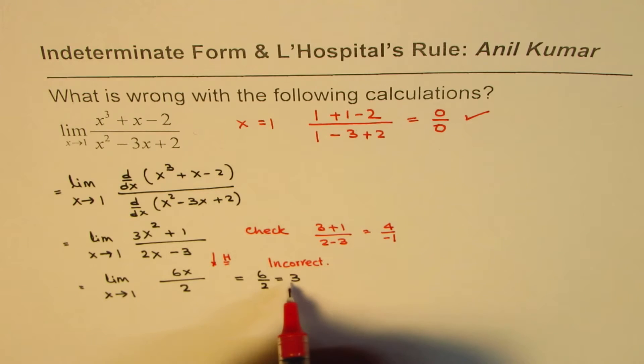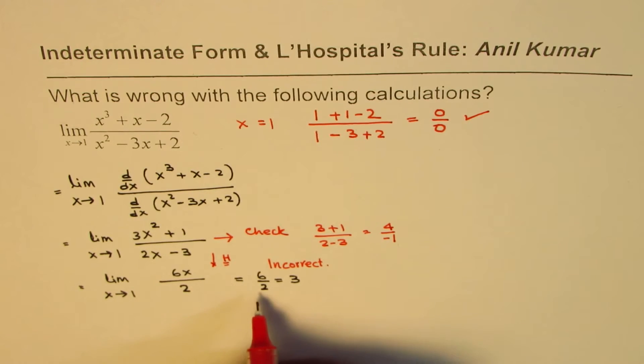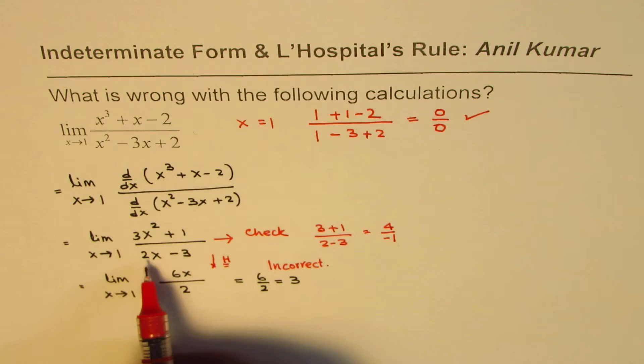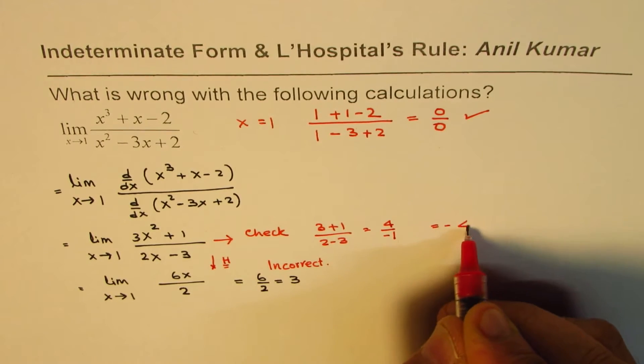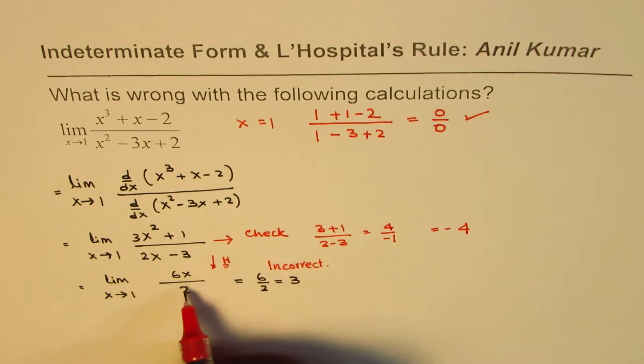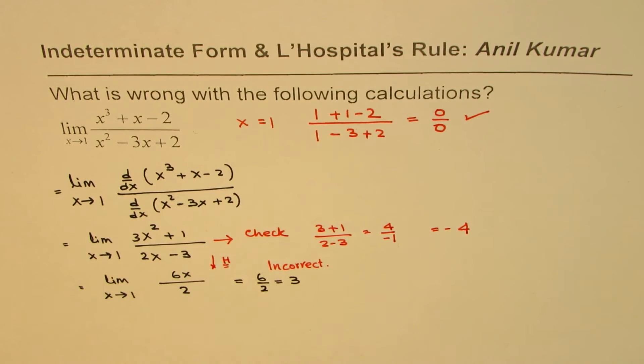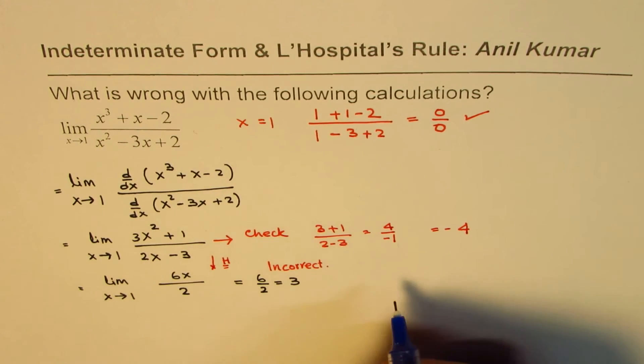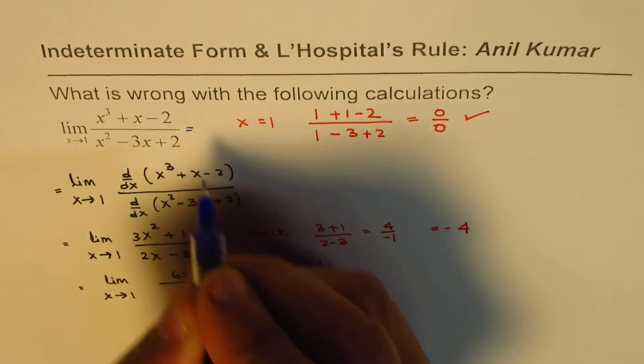Therefore this step where I performed L'Hospital's rule is incorrect. In fact the answer was right here, so the actual solution for this particular question will be that the limit is indeed equal to -4. There was no need to do it, it should not be done since this is not the indeterminate form. I hope that helps you understand the concept.